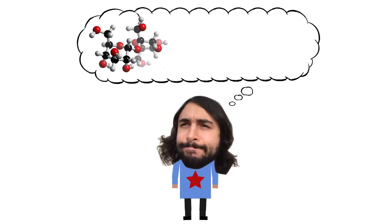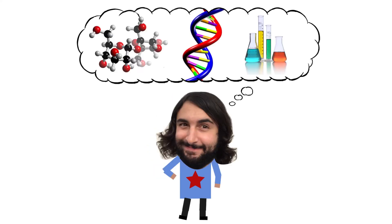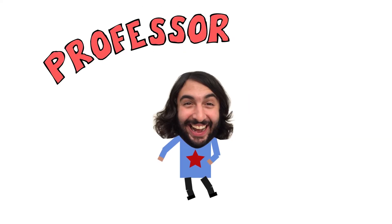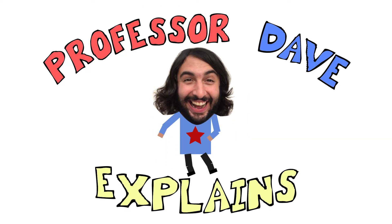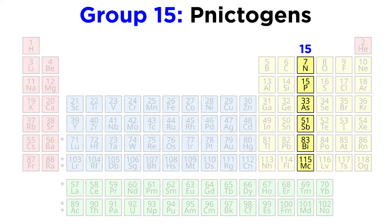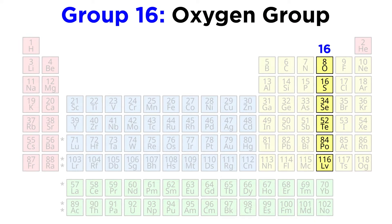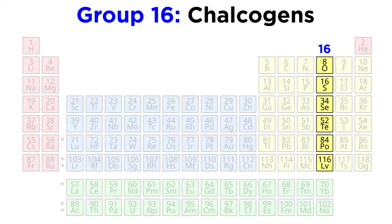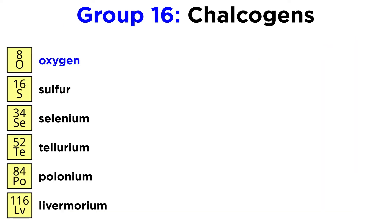Professor Dave Explains. Moving right along from the pnictogens, we reach group 16, which is the oxygen group, also known as the chalcogens.